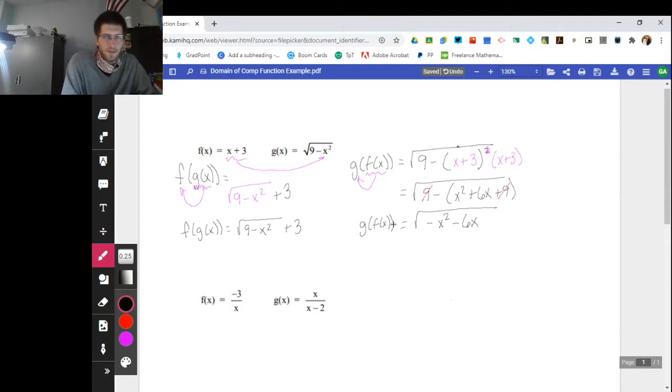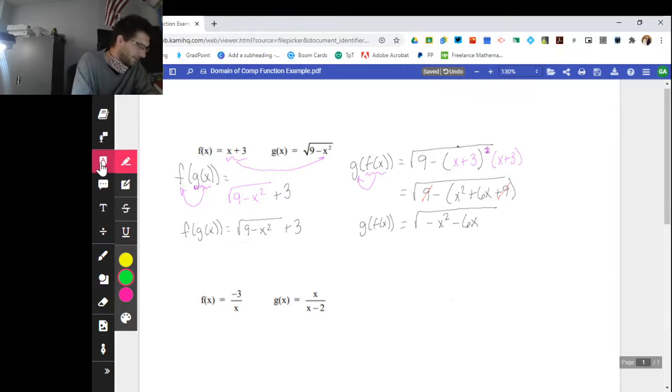So now I need to worry about the domain. When I worry about domain of a composite function, I worry about two things. I worry about the actual composite itself, any restrictions that may be on the composite. And I also worry about the restrictions placed on the inside function. So in this case, I'm worried about g of x in this first function, the inside function. And I'm worried about f of x in this function, the inside function.